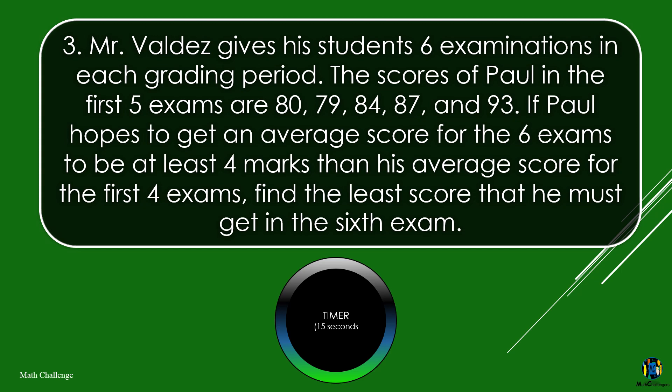Mr. Valdez gives his students six examinations in each grading period. The scores of Paul in the first five exams are 80, 79, 84, 87, and 93. If Paul hopes to get an average score for the six exams to be at least four marks more than his average score for the first four exams, find the least score that he must get in the sixth exam.